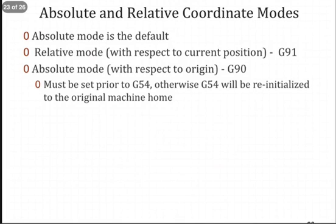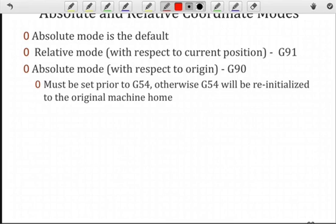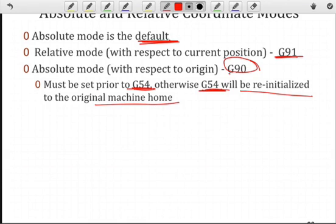Your absolute and relative coordinate modes by default, and again, don't rely on machine defaults, but it's going to be an absolute system. But it's a good practice to specify explicitly. So if all your moves are going to be absolute, then you should put a G90, and it has to be set prior to G54. Otherwise, what will happen, and there is some variation from controller to controller, but typically the G54 will be reinitialized to the original machine home, 0,0,0. So the sequence in which these codes appear can be important. If you're going to go to the relative mode, then you want to use the G91, and that will be with respect to that current position.